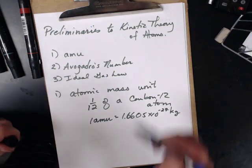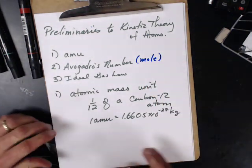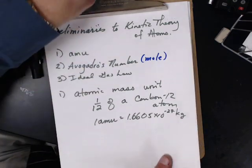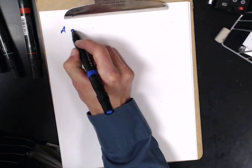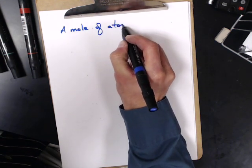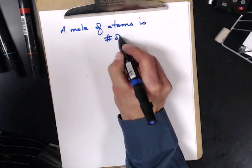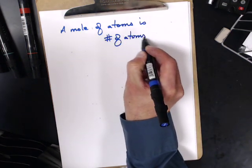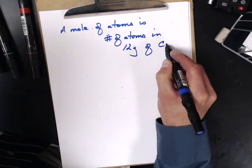Next, Avogadro's number, which I just realized I forgot about. That's when we begin to talk about the mole. So, the mole, let's get there. A mole of atoms is the number of atoms in 12 grams of carbon-12.